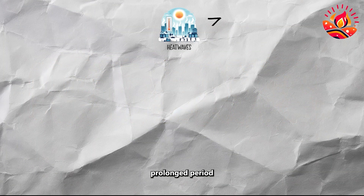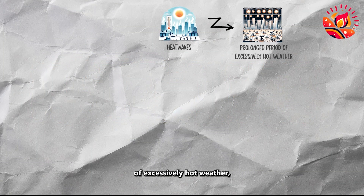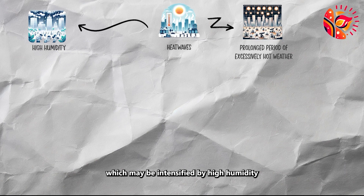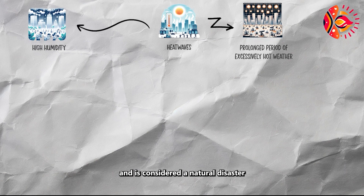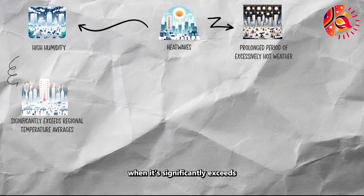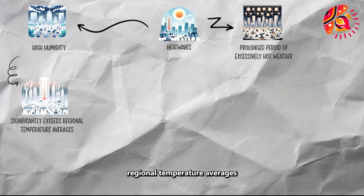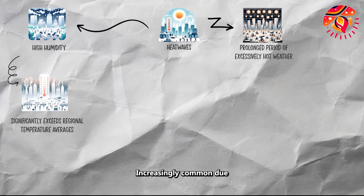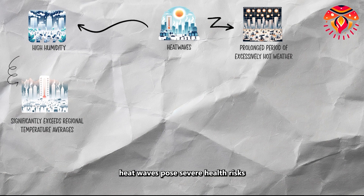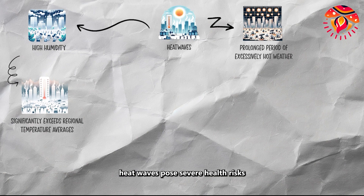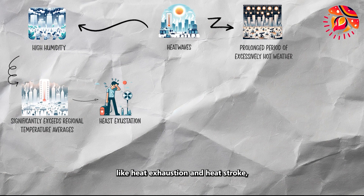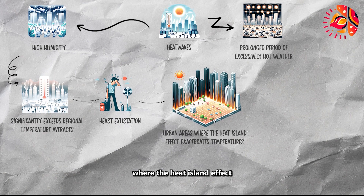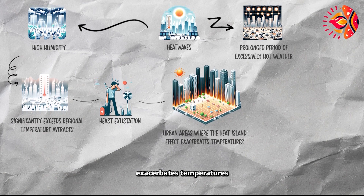A heat wave is a prolonged period of excessively hot weather, which may be intensified by high humidity and is considered a natural disaster when it significantly exceeds regional temperature averages and persists for several days. Increasingly common due to climate change, heat waves pose severe health risks like heat exhaustion and heat stroke, especially in urban areas where the heat island effect exacerbates temperatures.